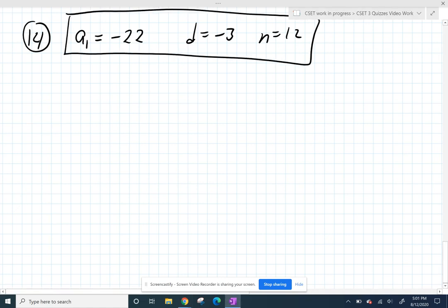We're given this arithmetic series that starts with negative 22, and you keep subtracting 3 a bunch of times, and they want to know the sum of the first 12 terms.